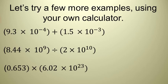Now to make sure that you understand this, let's do some problems on your own. So we have the first one here. So whichever calculator you have, type these numbers in. So type in 9.3 times 10 to the negative 4th plus 1.5 times 10 to the negative 3rd. So whichever calculator you have, you should get the answer 2.43 times 10 to the negative 3rd.